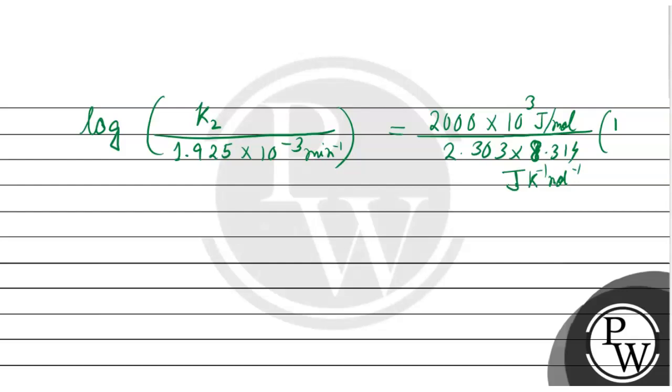Into 1 by 653 minus 1 by 723 Kelvin. Log of K2 per value is 6.81 into 10 raised to the power minus 2 per minute. This will be the value of K2.